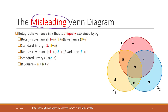Basically, the diagram is trying to tell us that the beta we see from the output is the variance in Y that has been uniquely explained by each independent variable. So let's say we have the dependent variable Y — for example, the house price — represented by the right circle, and X1 and X2 as the two independent variables, shown as the blue circle and the yellow circle.